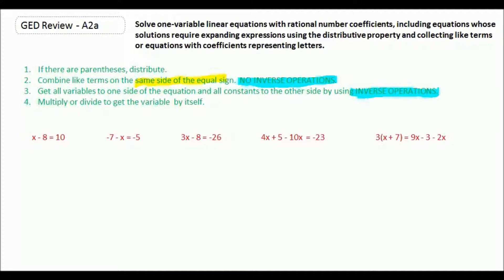Now the first example is very basic. x minus 8 equals 10. To get rid of minus 8, we must add 8. And whatever we do to one side, we need to do to the other side. So we get x equals 18.